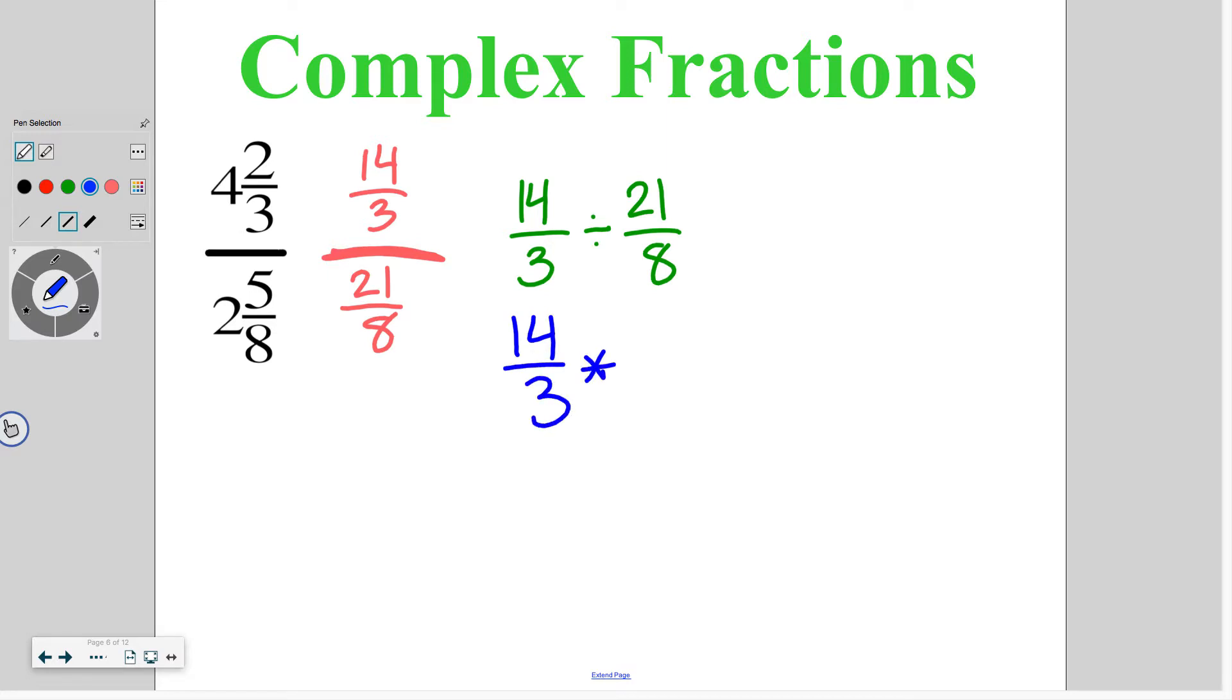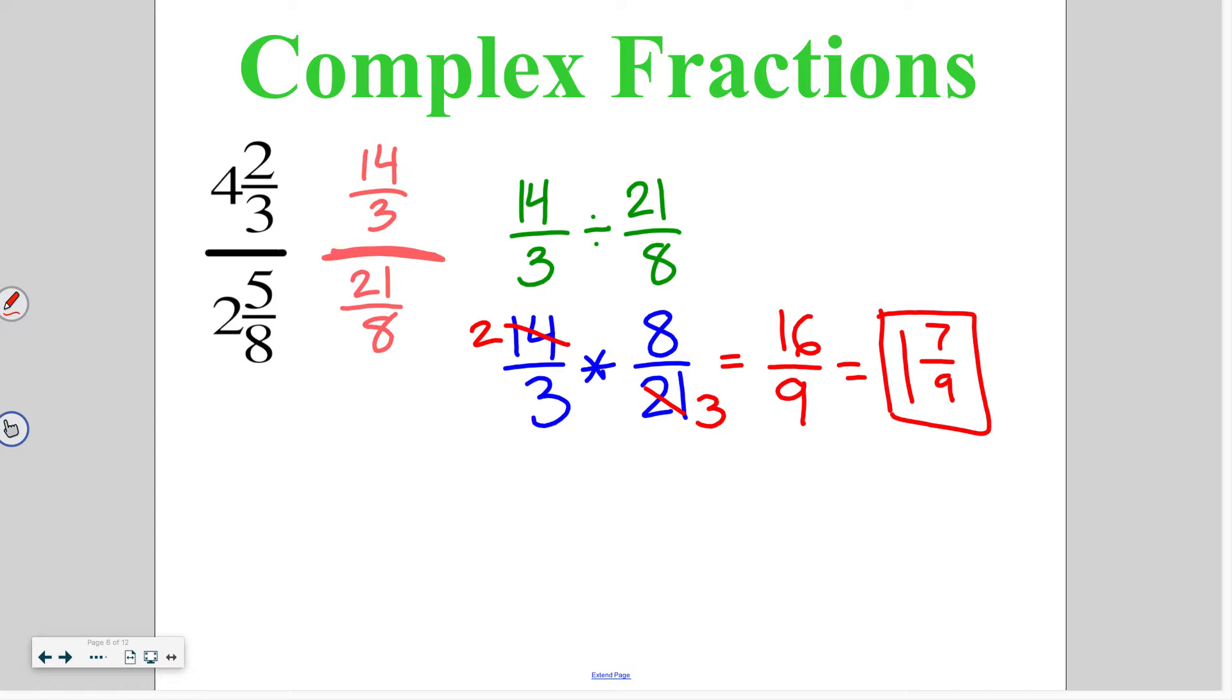Keep the first fraction as 14 over 3. Change the sign to multiplication and flip the second fraction to 8 over 21. Then I'm going to look to cross reduce. In this case 14 and 21 can both be divided by 7. So we reduce to 2 and 3. After I multiply I get 2 times 8 which is 16 over 3 times 3 which is 9. Reducing that back to a mixed number, 9 goes in one time and I have 7 ninths left over. So my simplified fraction is 1 and 7 ninths.